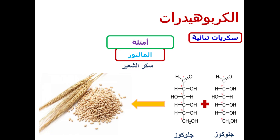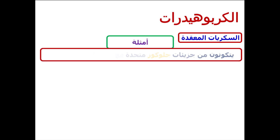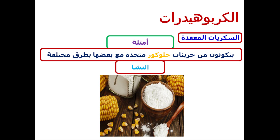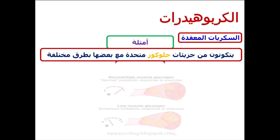كل جزيء سكر ثنائي يتكون من جزيء جلوكوز كمكون أساسي مع جزيء آخر من سكر أحادي إما جلوكوز أو فركتوز أو جالاكتوز. السكريات المعقدة تتكون من عدد كبير من جزيئات السكر الأحادي، ومن أمثلتها: النشا والسليلوز والجليكوجين.